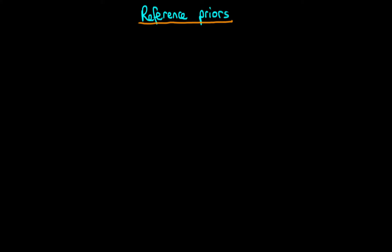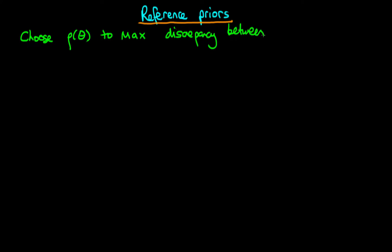In this video, I want to talk about reference priors, which were created by Bernardo as an attempt to form uninformative priors. The idea with reference priors is that you would choose your prior P of theta to maximise some form of discrepancy between the prior and the posterior, which I'm going to write as P of theta given T, where T is a sufficient statistic.